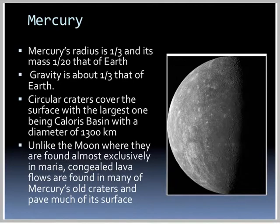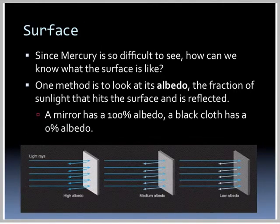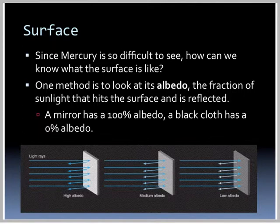There are circular craters that cover the surface, with the largest one being Caloris Basin with a diameter of 1,300 kilometers. Unlike the Moon where they are formed almost exclusively in maria, congealed lava flows are found in many of Mercury's old craters and pave a lot of its surface. One method to understand the surface is to look at its albedo, which is the fraction of sunlight that hits the surface and is reflected. A mirror has 100% albedo, and a black cloth has 0% albedo.